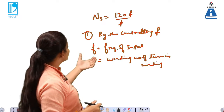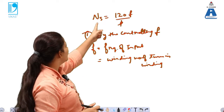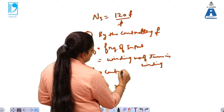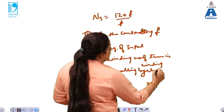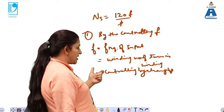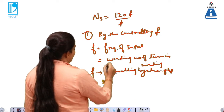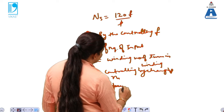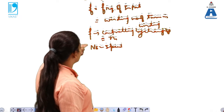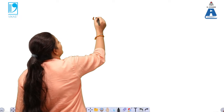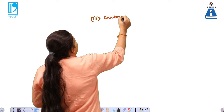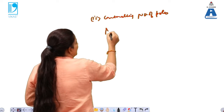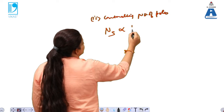If frequency F is controlled, then the synchronous speed Ns can be controlled. F can be changed by changing the winding number — that means by changing N1, the speed Ns can be controlled. The second method is by controlling the number of poles P. Since synchronous speed is inversely proportional to P (Ns ∝ 1/P), controlling P changes the speed.